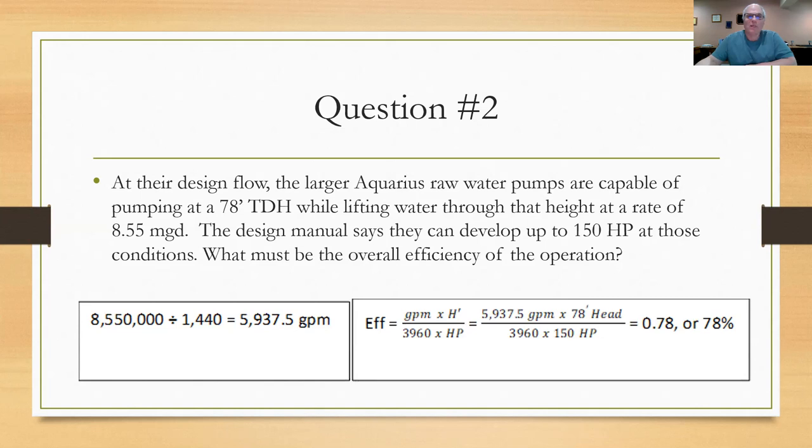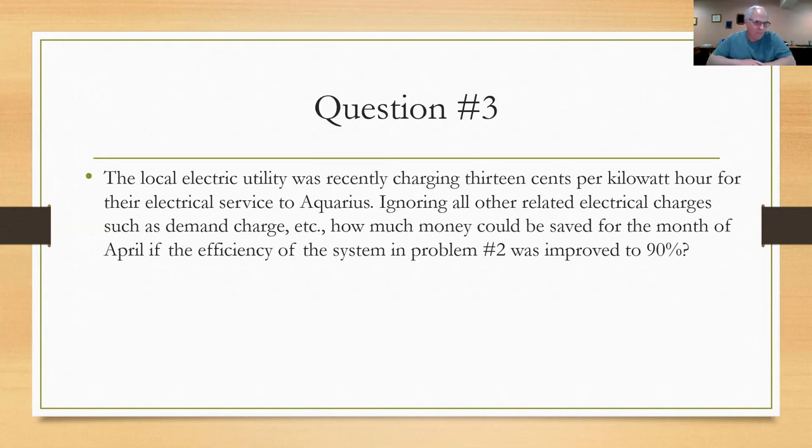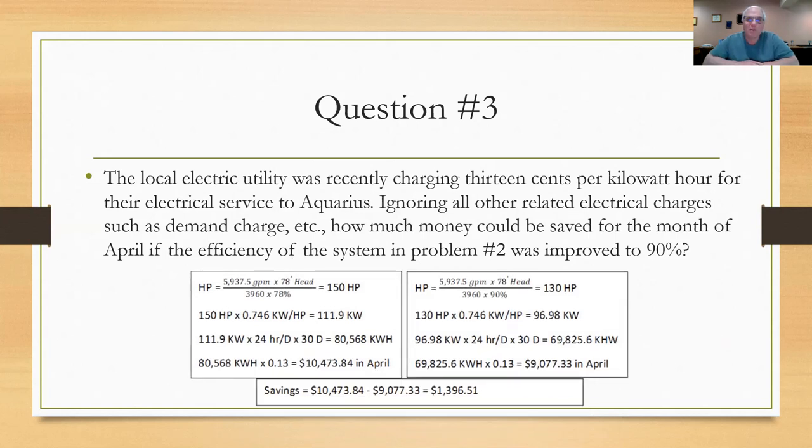We figured out at max flow and at the total dynamic head, we're at 78%. This question says, if the local electric utility is charging you 13 cents per kilowatt hour for their electrical service, and if you ignore all the related electrical charges such as demand charges, how much money could you save in the month of April if the efficiency of the system in problem number two was improved to 90%? Remember, we calculated 78% there. If we were able to make that pumping system 90% efficient, how much money could we save in April? Well, we know that April is a 30-day month. You can attack this two different ways, and I'm going to do this problem the long way. The first thing I'm going to do is figure out the cost in April to operate that system at the 78% efficiency, and I'll do it for the 90% efficiency and compare the cost.